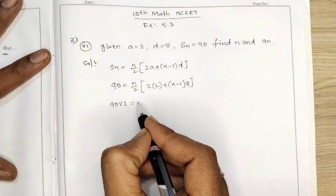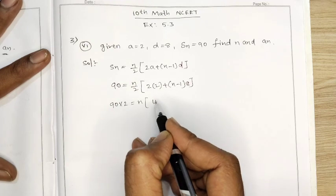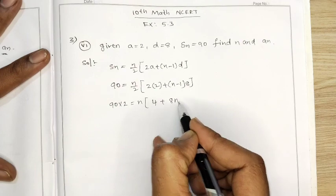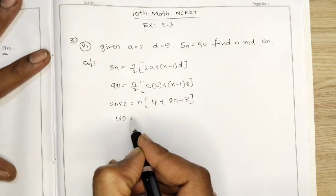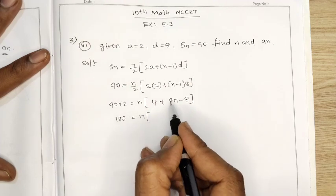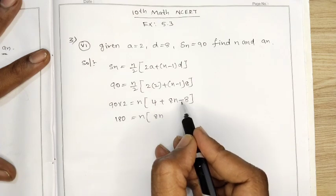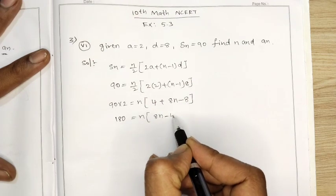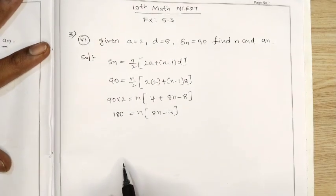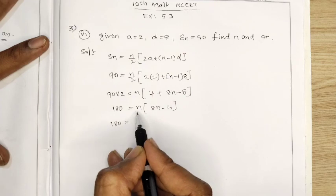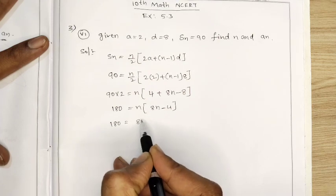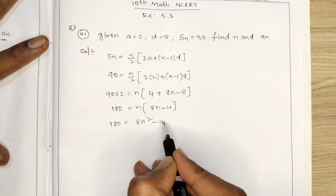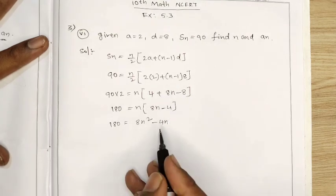90 into 2 — this 2 is shifting to the left side — so 90 into 2, n is remaining here. 2 into 2 is 4, plus 8 into n, 8 into 1 minus 8. 9 twos are 18, so 180. Then 8n, and I will write 4 minus 8, means minus 8 plus 4 equals minus 4. So 180 equals n into bracket 8n plus 4 minus 4, which gives 8n squared minus 4n.